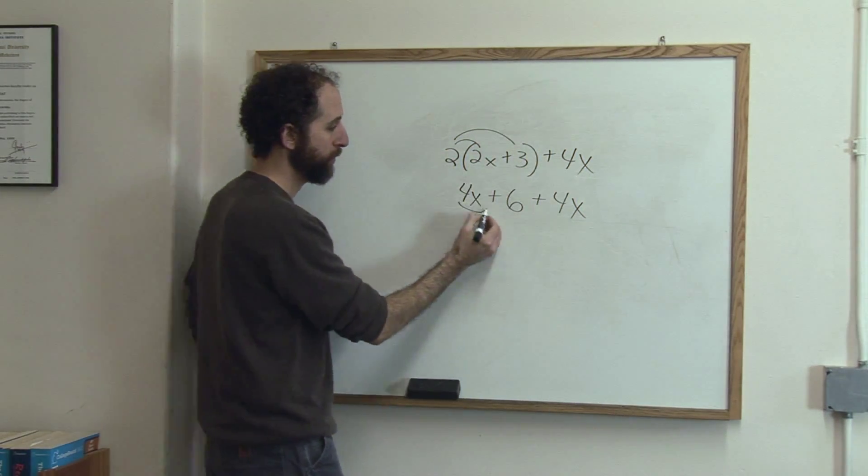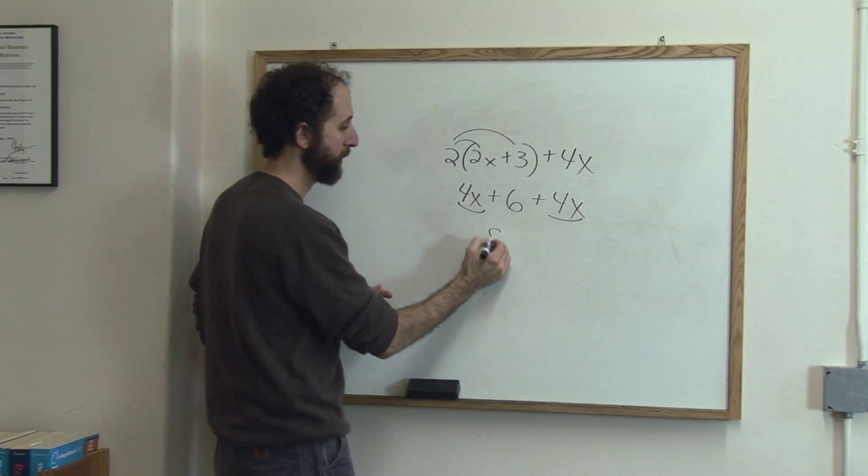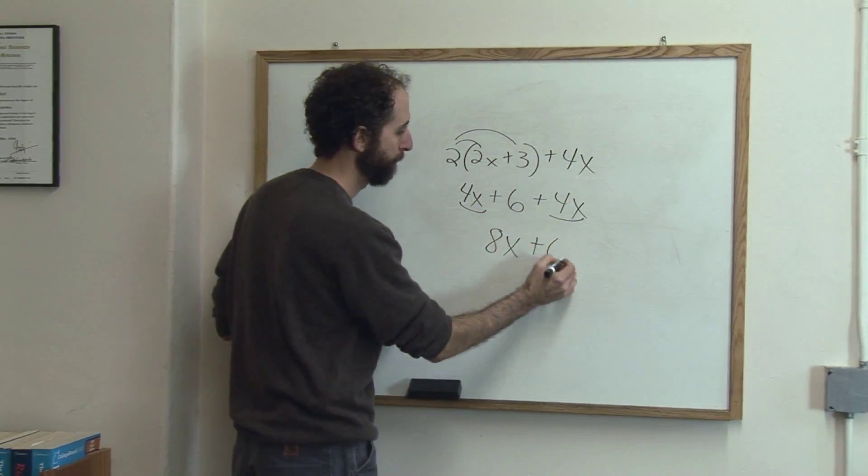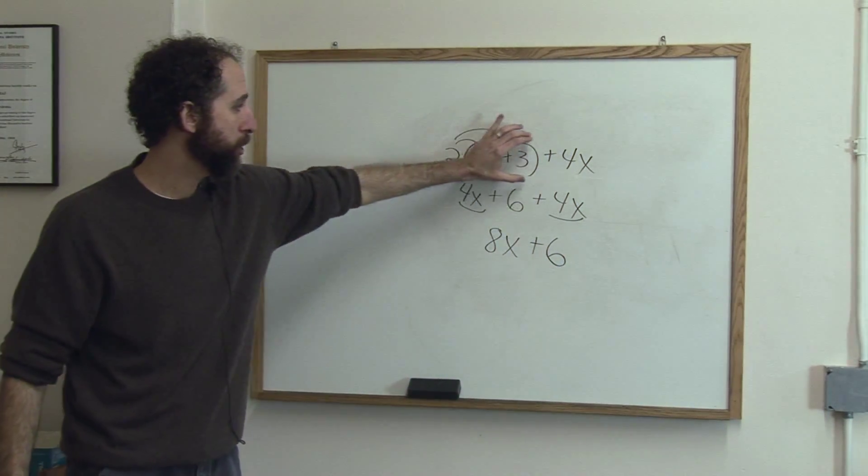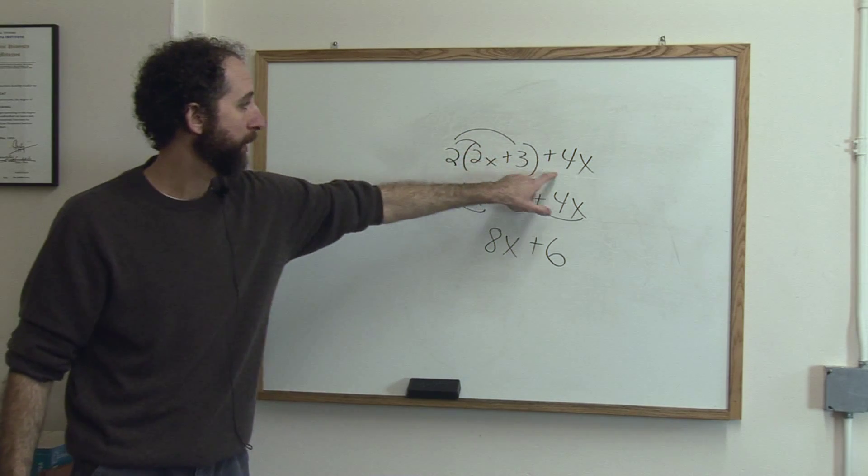So now we can collect like terms. 4x plus 4x is 8x plus 6. So the variable expression 2 times the quantity 2x plus 3 plus 4x.